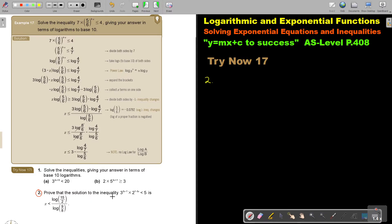They say prove that the solution to the inequality. Now what is that inequality? It's going to be 3^(2x-1) multiply 2^(1-3x) and it's smaller than 5. Now, the first step, I'm going to put a log on both sides. I'm going to put it in brackets: log 3^(2x-1), 2^(1-3x), log 5.